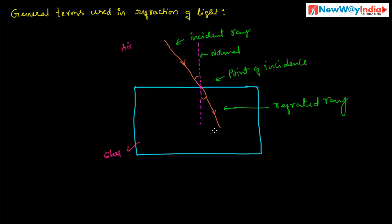The next term is the angle of incidence. The incident ray makes an angle with the normal at the point of incidence. This angle is called the angle of incidence, denoted by I. The point of incidence is denoted by O.